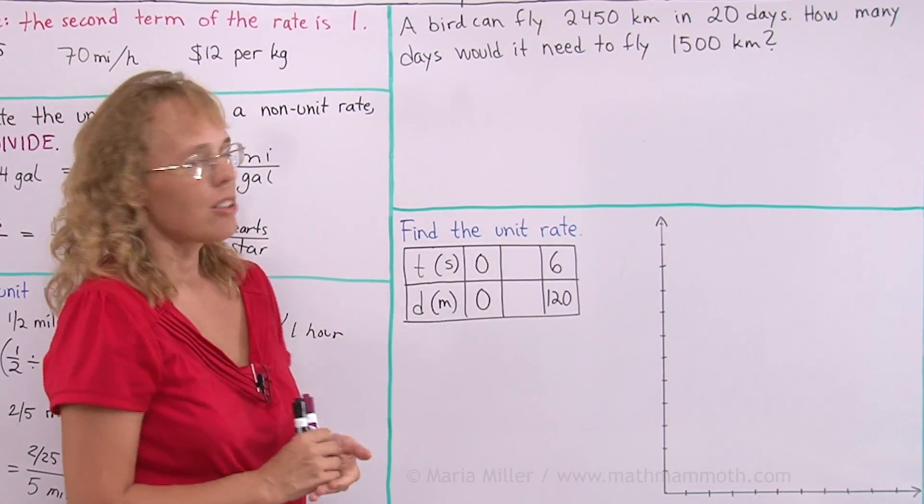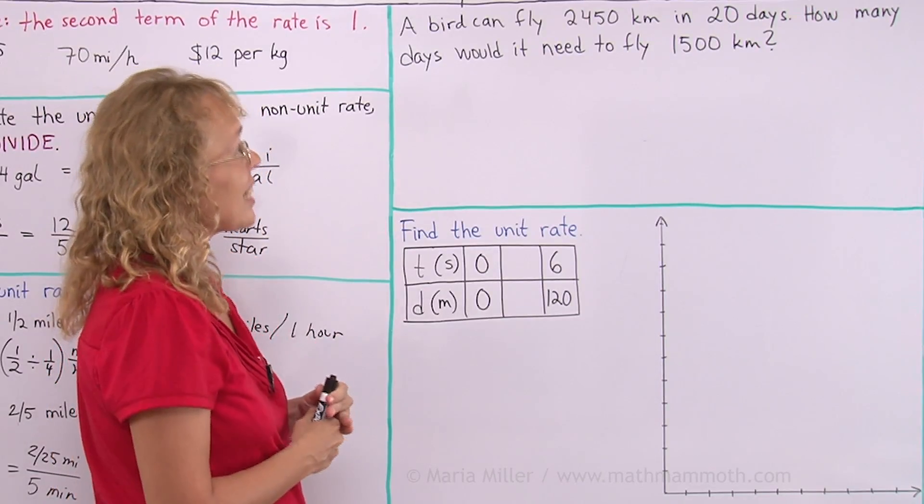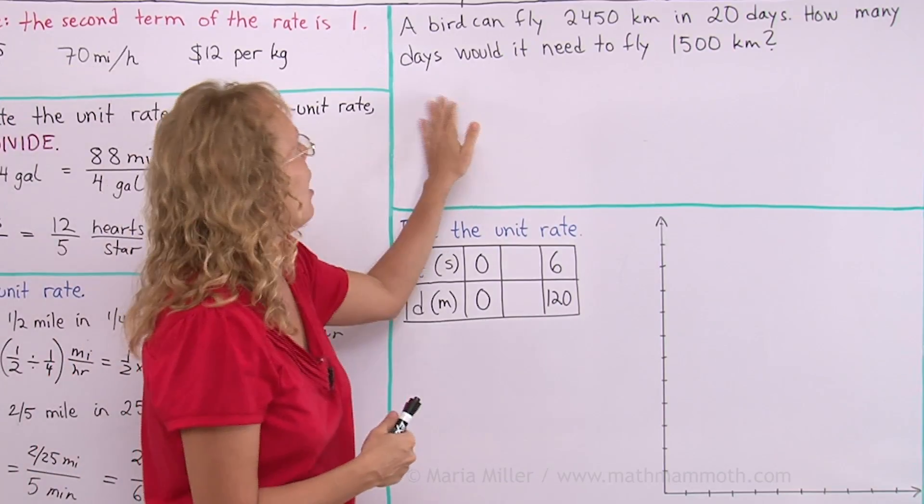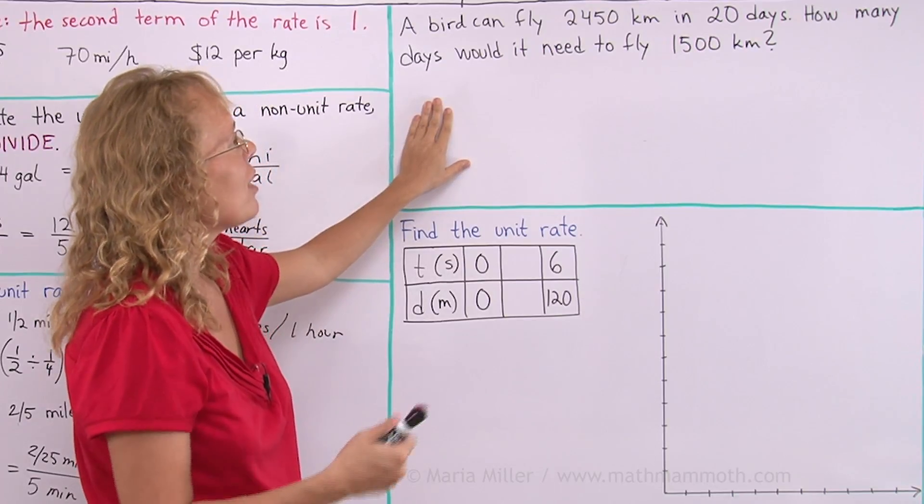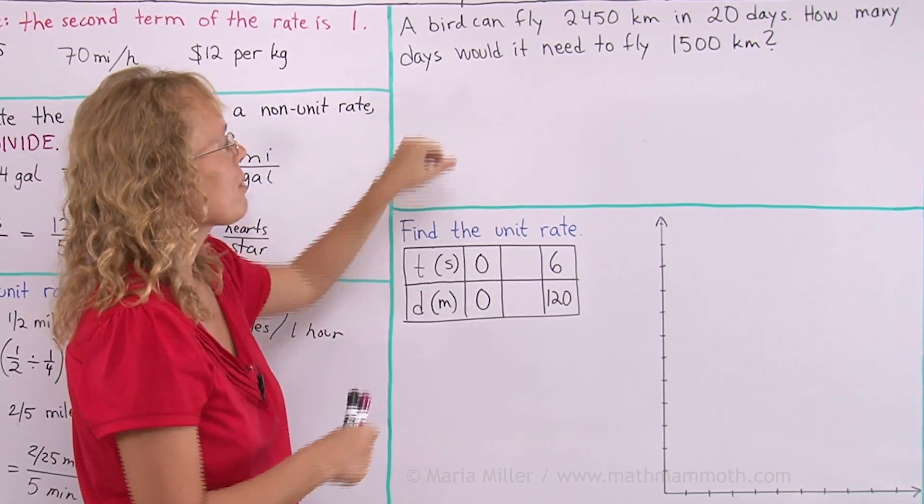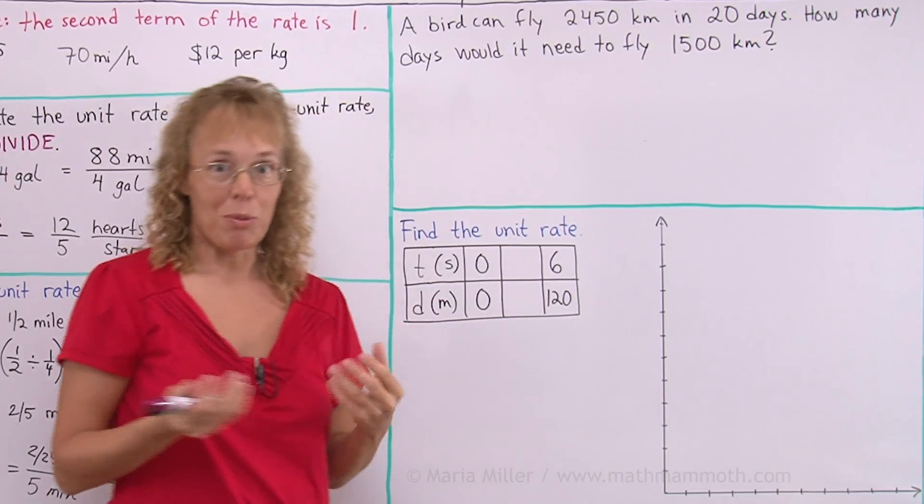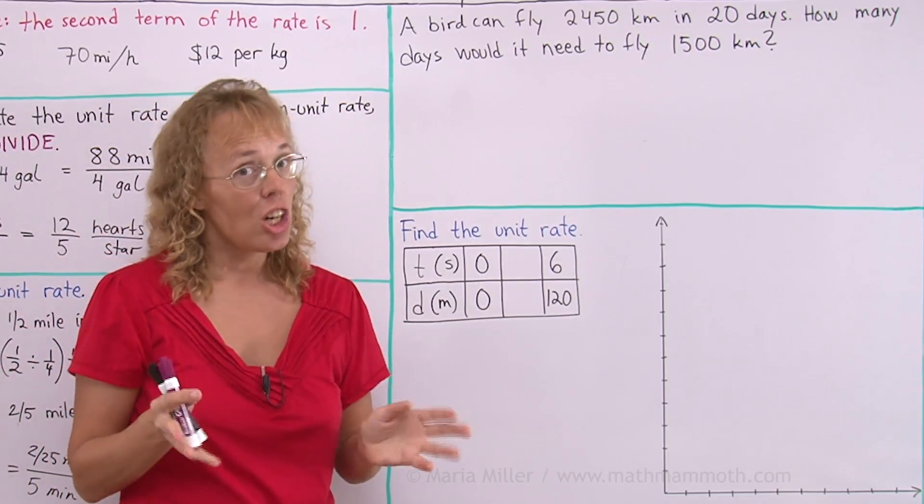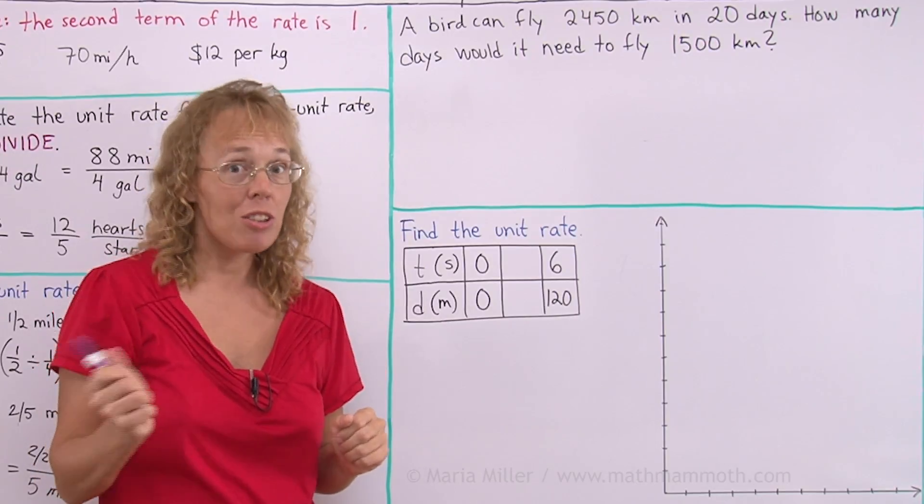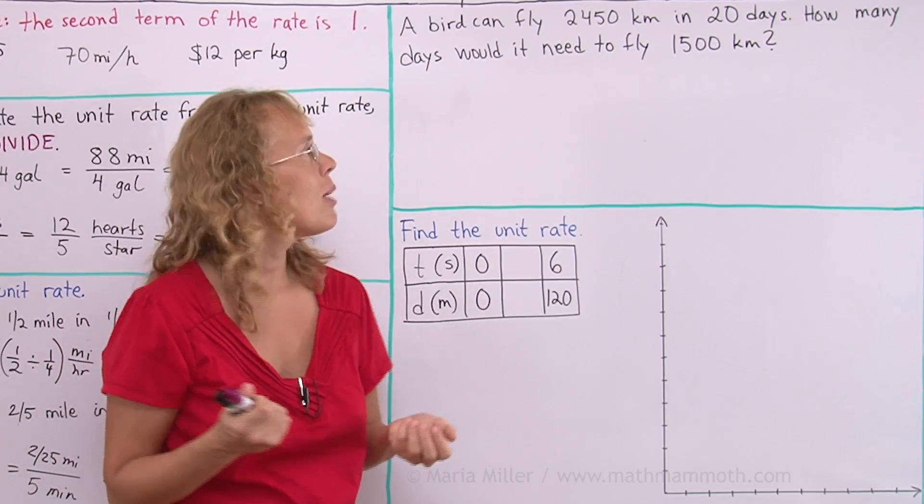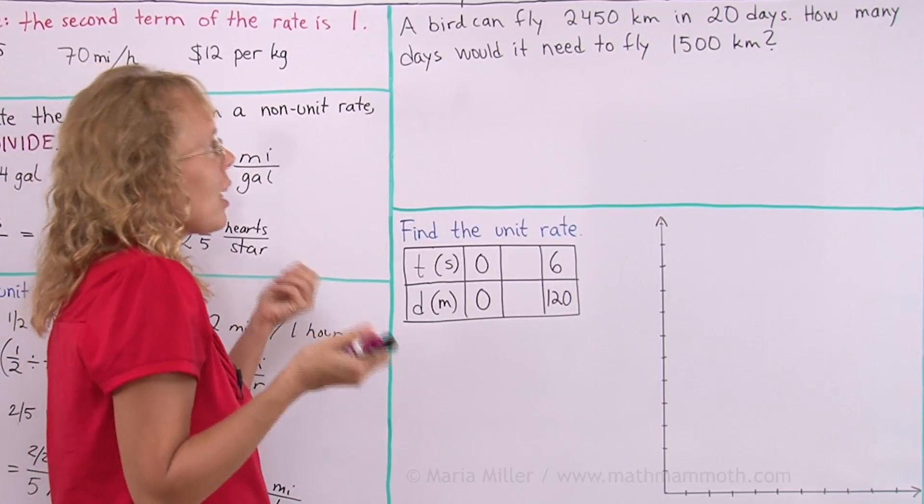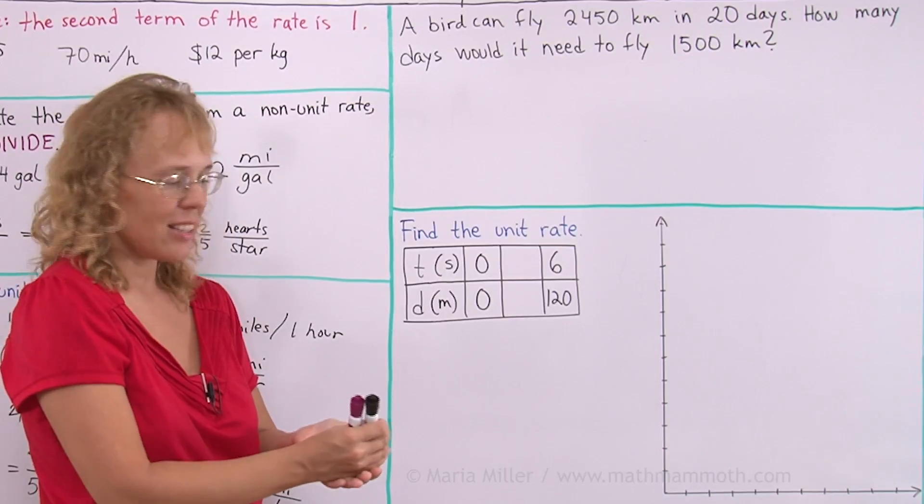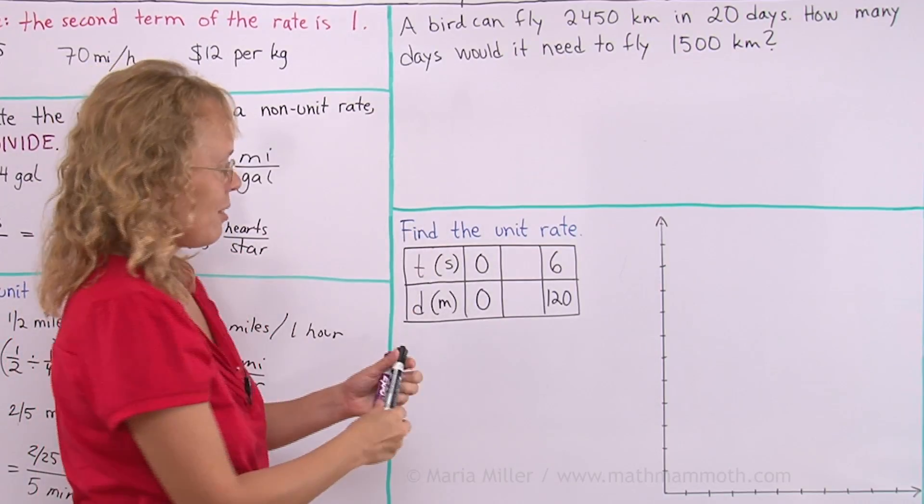A bird can fly 2450 kilometers in 20 days. How many days would it need to fly 1500 kilometers? This is a typical problem where we would use a proportion. But today, I'm going to solve it not using a proportion, but using a unit rate. Because that's a pretty natural way of thinking about it. You would just simply calculate the kilometers per one day. Unit rate. And then figure out the other part.